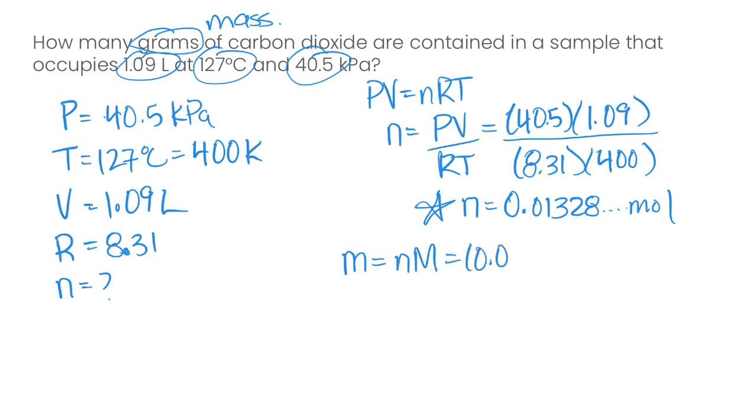So we have the number of moles of our gas, 0.01328. And the molar mass of carbon dioxide gas is 44.01 grams per mole. And so solving this equation gives us 0.584 grams.